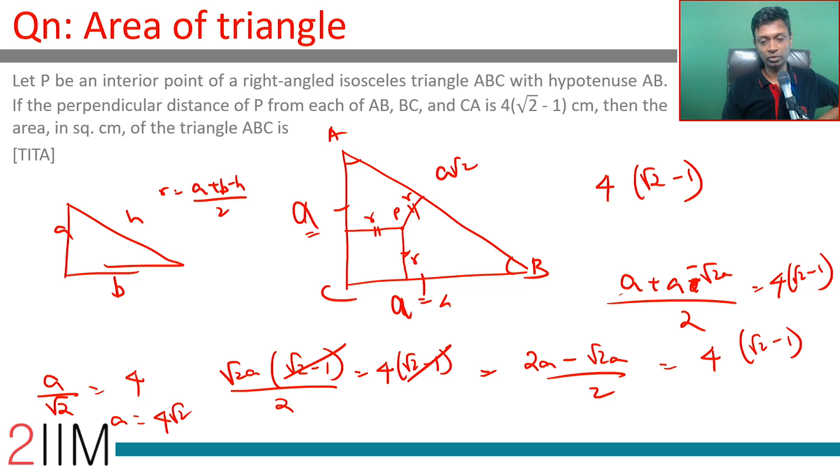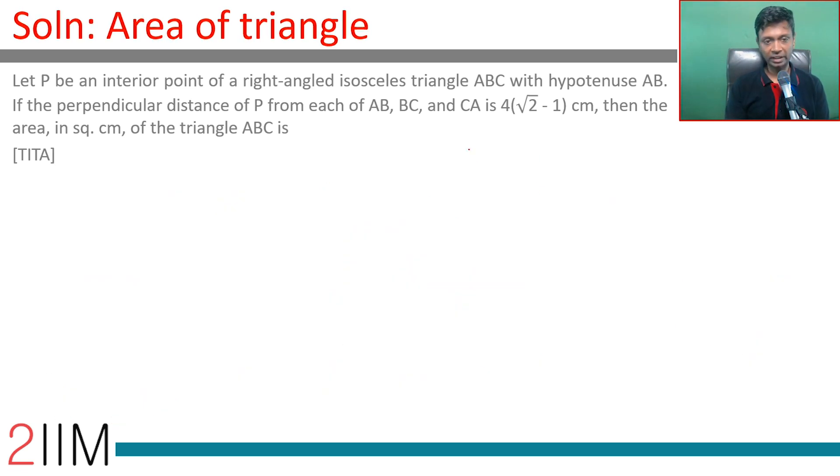This side is 4√2, and this side is 4√2. The area in square centimeters of triangle ABC is 1/2 × 4√2 × 4√2. Since √2 × √2 = 2, this simplifies to 16 square centimeters.